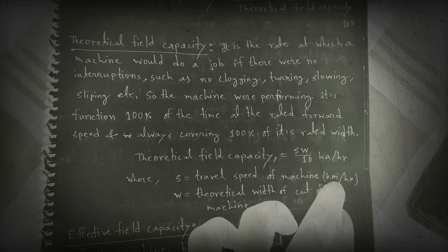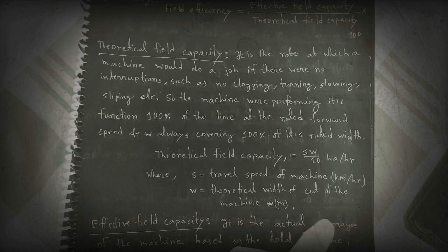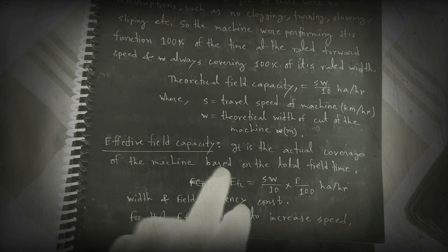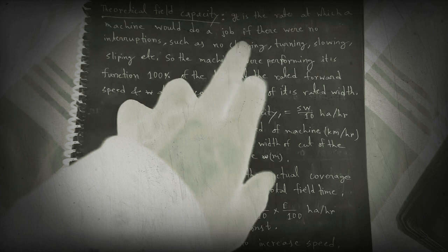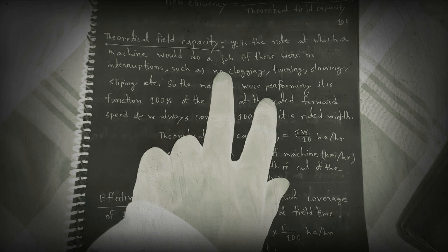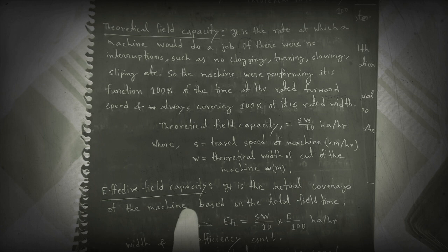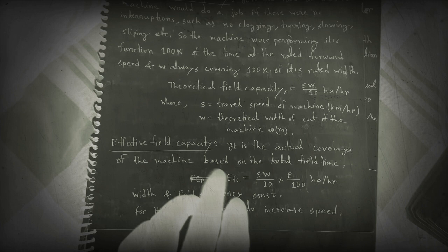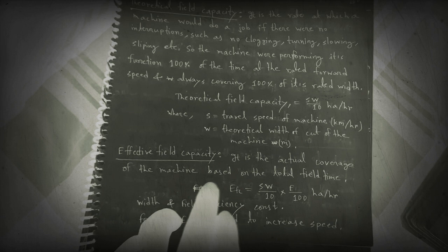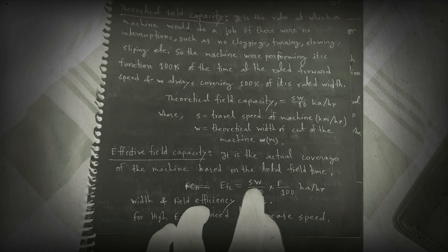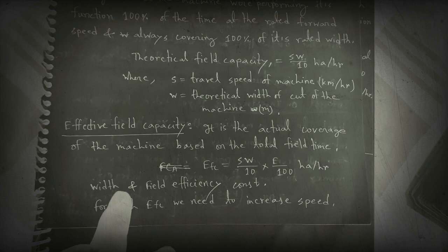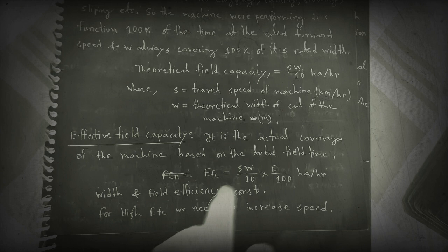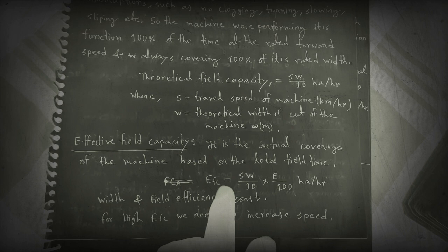Effective field capacity (EFC) is the actual coverage of the machine based on total field time. Unlike theoretical field capacity, it does not assume 100% width coverage. EFC equals (W × S / 10) × (E / 100) hectare per hour, where W is the width, S is speed, and E is field efficiency. If W and E are fixed, to increase EFC we should increase the speed of the combine harvester.